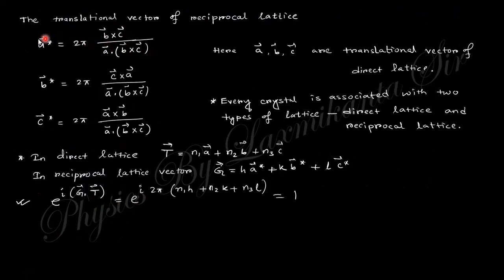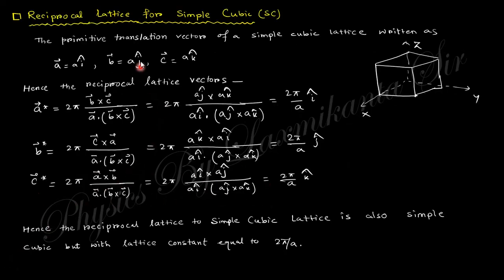Taking a, b, c vectors as the translational vectors of the direct lattice, and a*, b*, c* as the translational vectors in the reciprocal lattice, their combination must equal one. For example, for a simple cubic lattice, the direct lattice vectors are a·i-cap, a·j-cap, and a·k-cap. Applying the reciprocal lattice formula, the result is also i-cap, j-cap, k-cap but with a constant of 2π/a. So the reciprocal lattice of a simple cubic is also a simple cubic, but with lattice constant 2π/a.